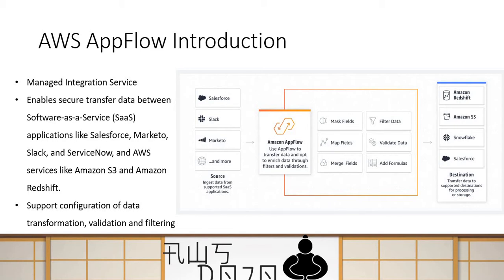In addition to transformations, AppFlow also provides validation and filtering. Validation means that if you are moving data from source to target and want to validate your source data for certain correctness, you can do that without writing any single line of code. For instance, you can check if a field at the source is blank or null, and if so, take action — either ignore that record or terminate the whole data flow.